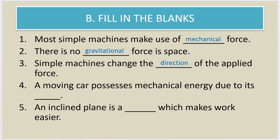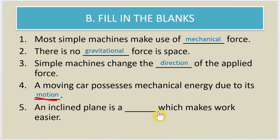Fourth fill in the blank: a moving car possesses mechanical energy due to its dash — the correct answer is motion. Fifth fill in the blank: an inclined plane is a dash which makes work easier — the answer is slope. An inclined plane is a slope which makes work easier.